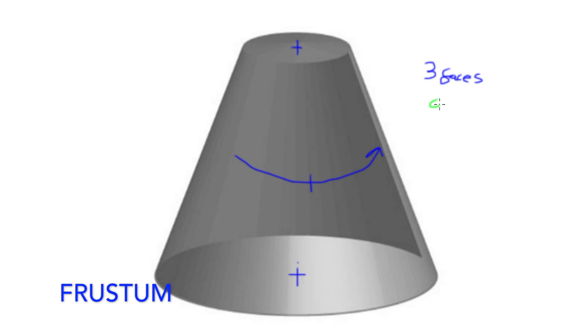It has 0 vertices, as you've taken the top point off, however now it has 2 edges, as it divides the 3 faces.